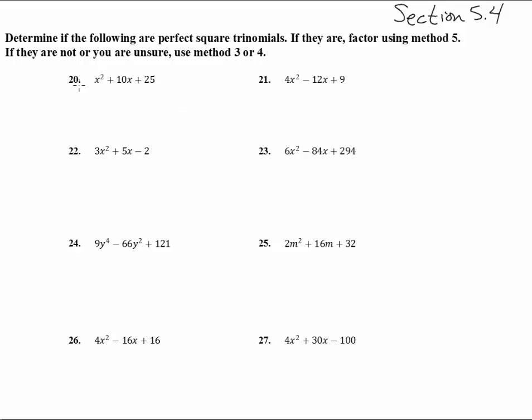Here we are in section 5.4 and we're going to do numbers 20 through 27. Now in this one it says determine if the following are perfect square trinomials and if they are factor using that special shortcut method 5 writing it as a perfect square. If they're not or we're unsure then we have to go back to the standard trinomial ways of doing things.